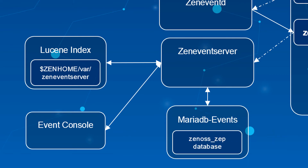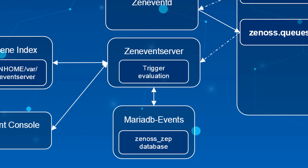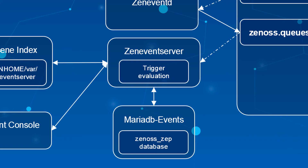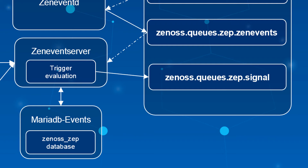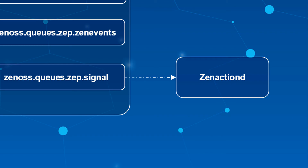Finally, ZenEventServer is responsible for comparing incoming events against all configured triggers. If a matching and enabled trigger is found, ZenEventServer publishes a copy of the event to another Rabbit queue — zenos.queues.zep.signal. From this signal queue, events are consumed by the final daemon in the Resource Manager event pipeline: ZenActionD.